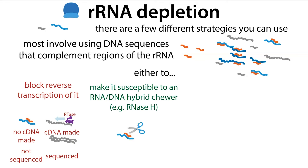Those probes can also be used to make the rRNA susceptible to RNase H — an enzyme that finds RNA-DNA duplexes, these hybrids, and selectively cuts the RNA. This allows the probes to get your rRNA digested and degraded so that it won't be sequenced.